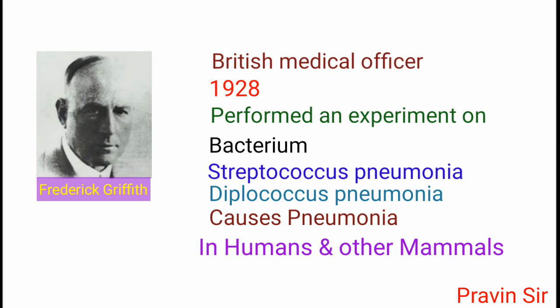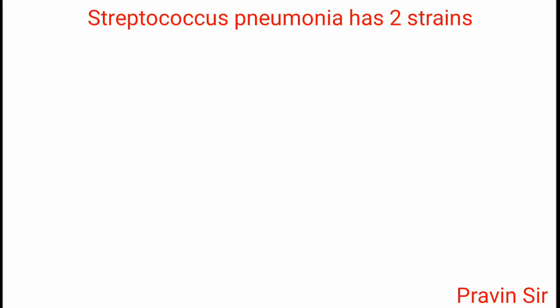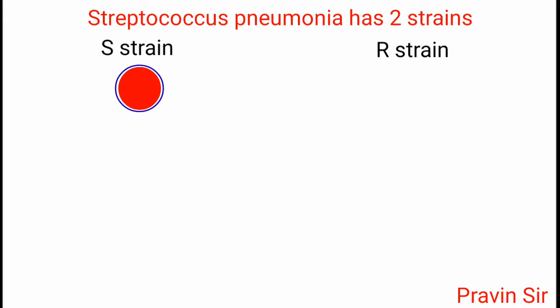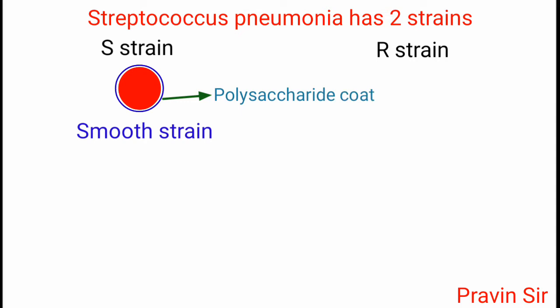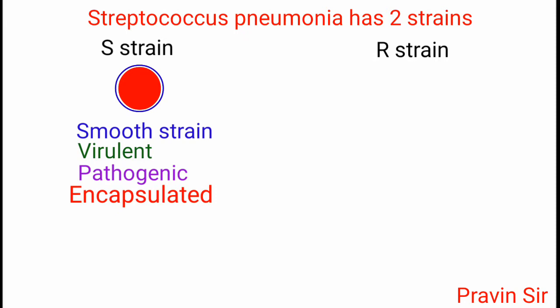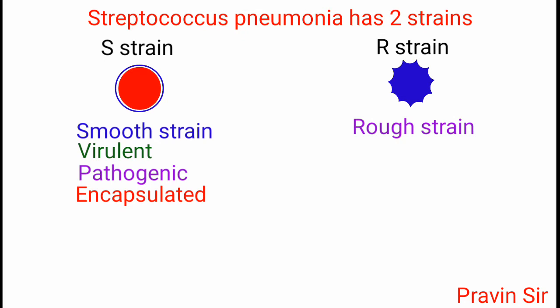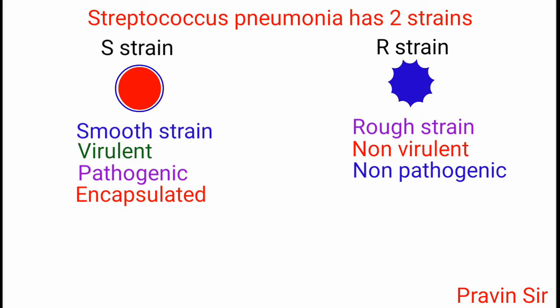It has two strains: S strain and R strain. S strain is the smooth strain. It has a polysaccharide coat. It is virulent, pathogenic, and encapsulated. R strain is the rough strain. It is non-virulent, non-pathogenic, and non-capsulated.